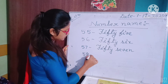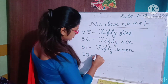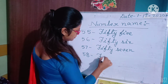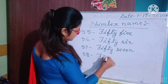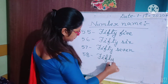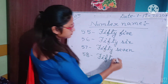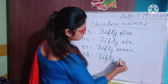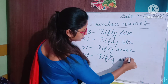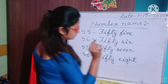Now fifty eight. We will write fifty eight. What is the spelling of eight? E-I-G-H-T — eight. Fifty eight.